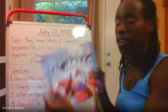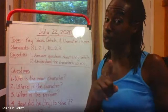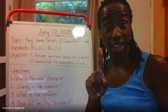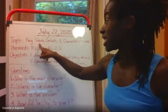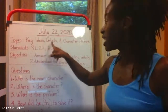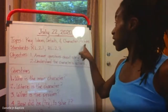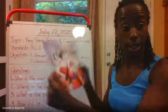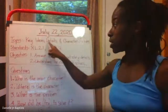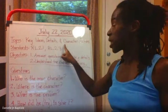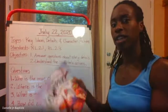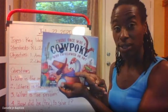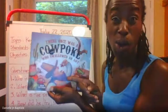She's so excited about this book. I need to say to you, happy July 22nd. And also the topic of this lesson is key ideas, details, and character actions. So we're going to think about the ideas in the story, we're going to talk about the details, and we are going to think about the character actions — so we're going to think about this cowpoke's actions, or this cowboy's actions, what he does.